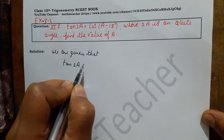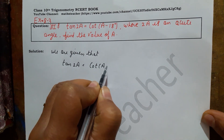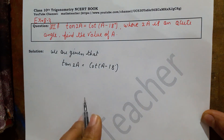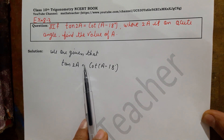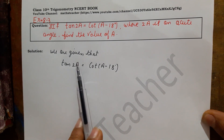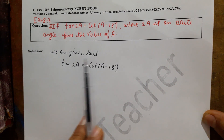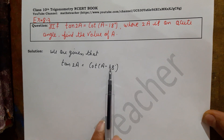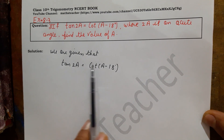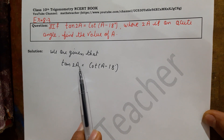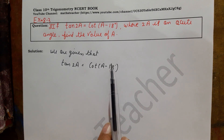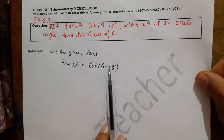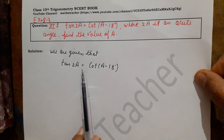So here we have the relation given: tan 2A equals cot(A minus 18 degrees), and we have to find the value of A. We can find the value of A when tan and cot are comparable. Here both are acute angles — angle A is an acute angle. We will use the concept of complementary angles to find the value.